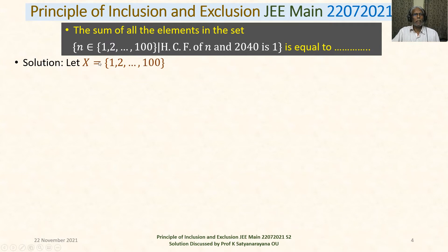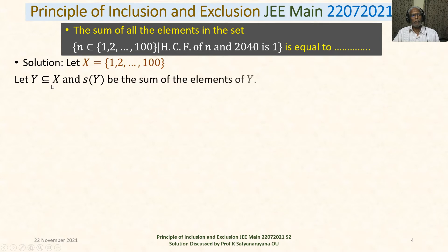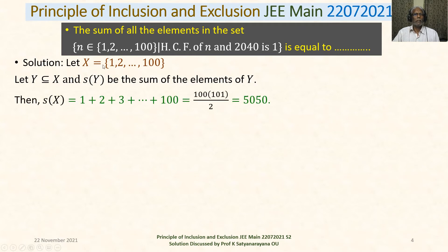Let X be the set of all natural numbers {1, 2, 3, ..., 100}. Let Y be a subset of X, and S(Y) denotes the sum of the elements of Y. Then S(X) is the sum 1 + 2 + 3 + ... + 100, which equals n(n+1)/2 where n = 100, giving 100 × 101 / 2 = 5050.